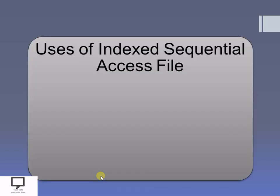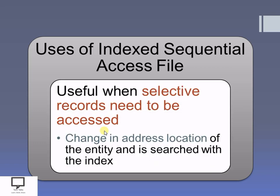Now let's see where the index sequential file is useful. Whenever you want to access selective records, at that time the index sequential file is useful. If you want to access a particular record, in that case we will use the index sequential file. For example, if I just want to change the address location of any particular entity or record which I want to search with the help of index, I don't want to change the address of all the records — just one entity. In that case, I will use the index sequential file. With the help of the index, I will directly move to that position and change the address location accordingly, making smart use of the index sequential access file.